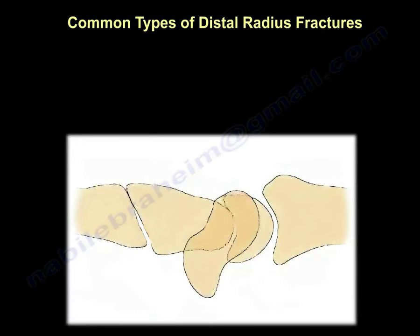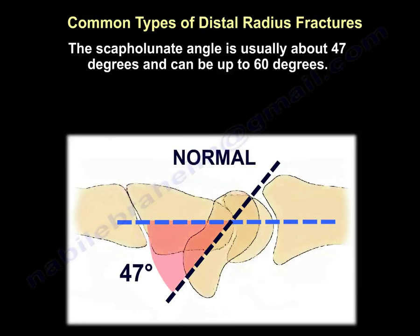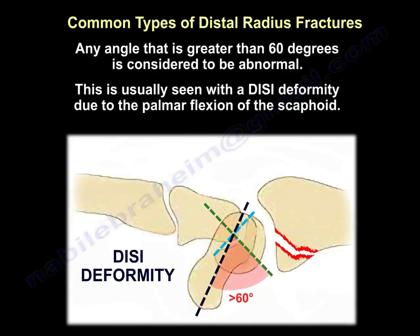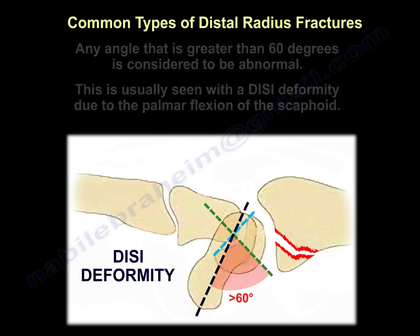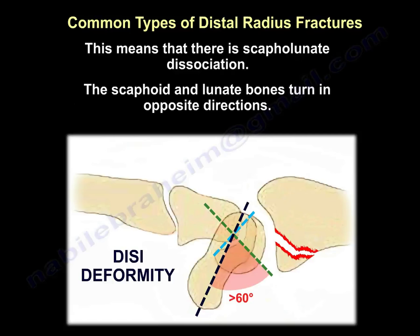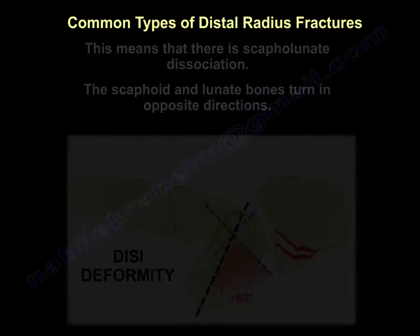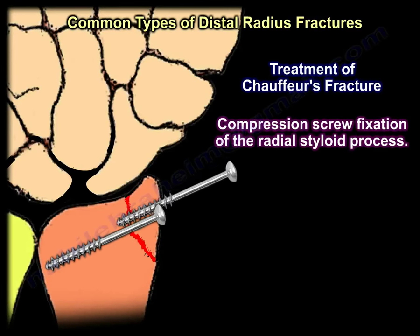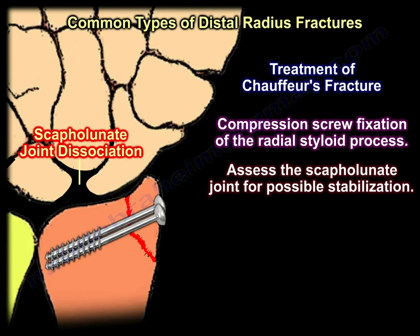The scapholunate angle is normally approximately 47 degrees and can be up to 60 degrees. Any scapholunate angle greater than 60 degrees is considered abnormal and is seen in DISI deformity due to palmar flexion of the scaphoid, indicating scapholunate dissociation. The lunate and scaphoid move in opposite directions and no longer work together as a team. Treatment of the Chauffeur fracture is usually by compression lag screw fixation of the radial styloid process, followed by assessment of the scapholunate joint for possible stabilization.